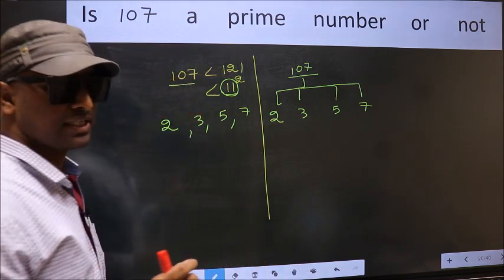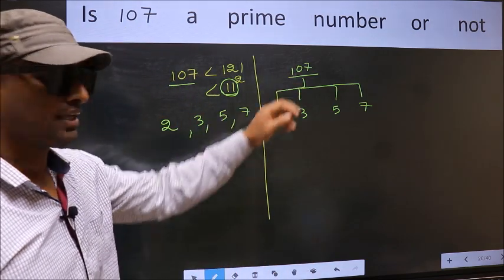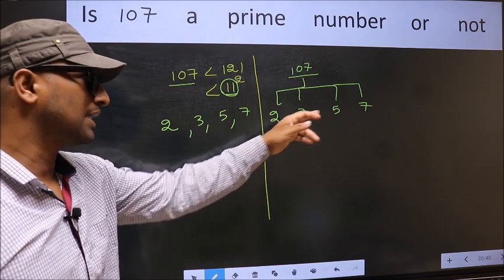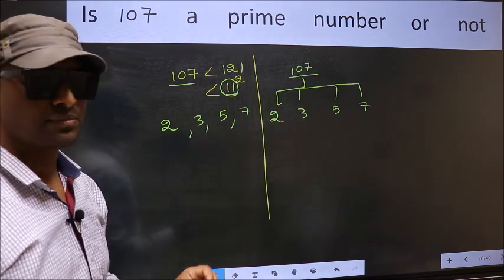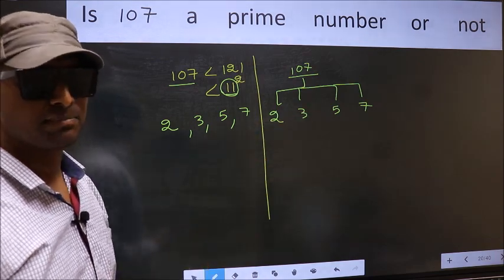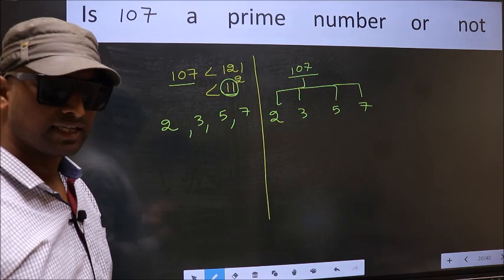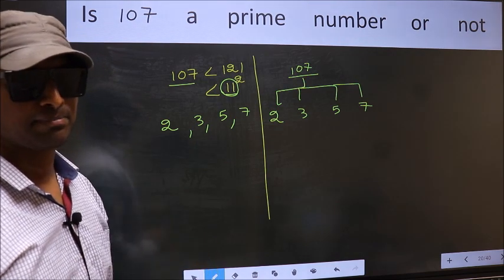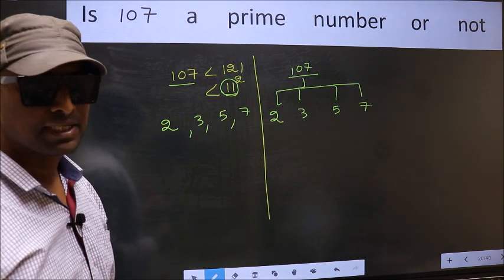If the number is divisible by any one of these numbers, we say it is not a prime number. Otherwise, it is a prime number. Did you understand the method?